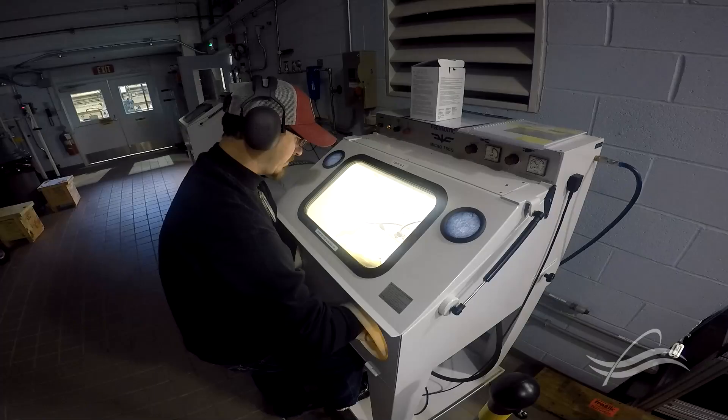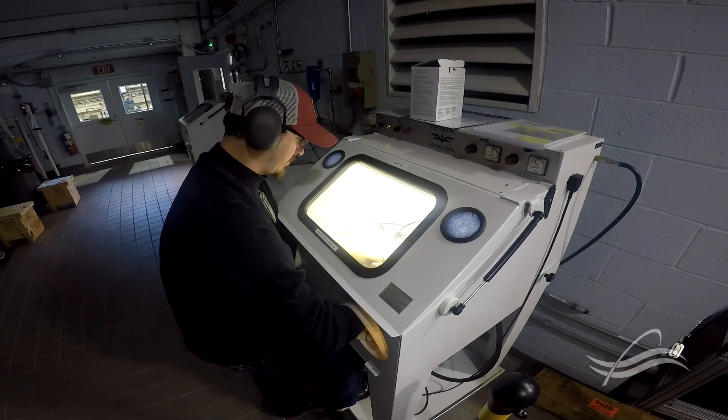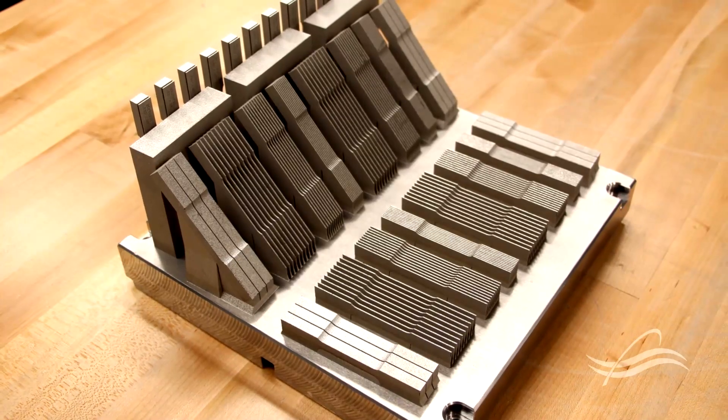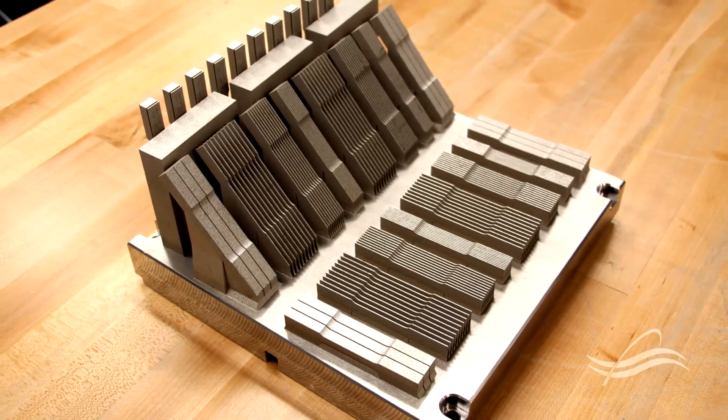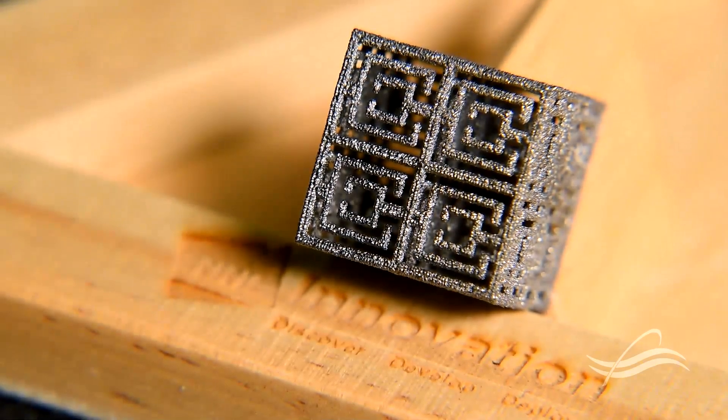It's really interesting whenever we're able to take a look at a part on the computer. We're able to look at ways that we can reduce weight or take away mass. Additive manufacturing is really more precise. You can have strength in different directions, compliance in other directions. There's a lot of capabilities that additive manufacturing can achieve that are outside the realm of traditional manufacturing.